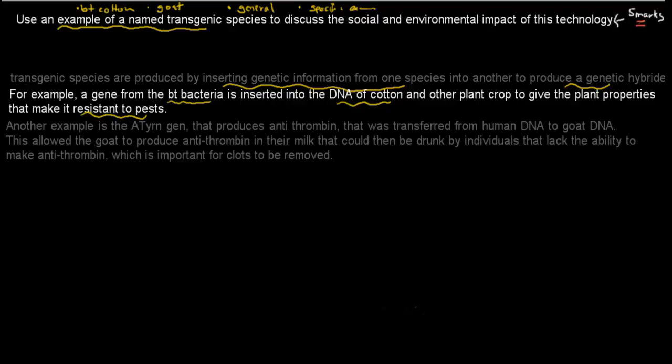The other example I gave was the ATYRN gene that produces antithrombin, which was transferred from human DNA to goat DNA. It's a transgenic species because the goat will have its DNA and some human DNA. This allowed the goat to produce antithrombin in their milk that could then be drunk by individuals that lack the ability to make antithrombin, which is important for clots to be removed.